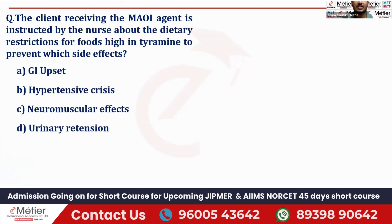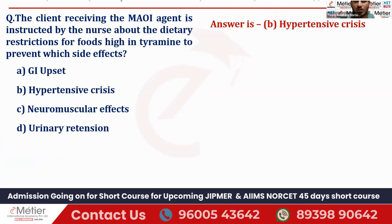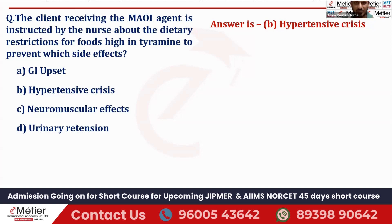Four options are given: GI upset, hypertensive crisis, neuromuscular effect, and urinary retention. The right answer is option B, that is hypertensive crisis. More than 180 systolic blood pressure and more than 110 diastolic blood pressure — that is more than 180/110 mmHg — is called a hypertensive crisis. If the patient is taking MAOI along with tyramine-rich foods, there is a chance of hypertensive crisis.